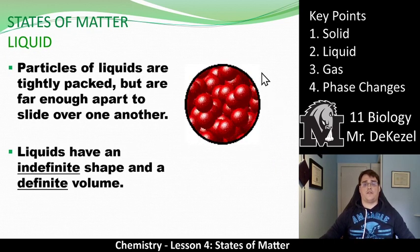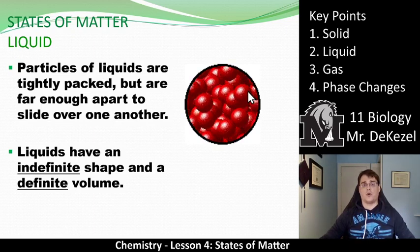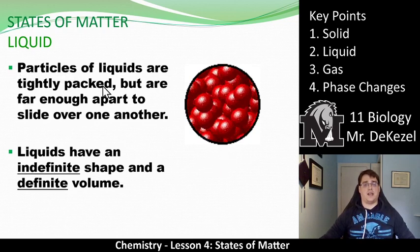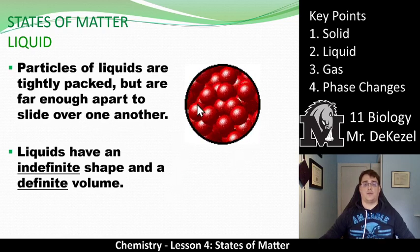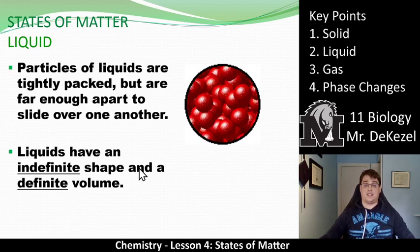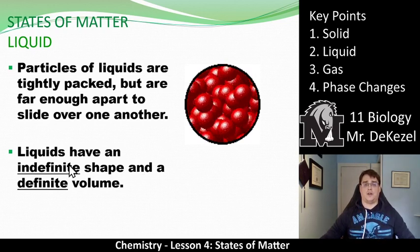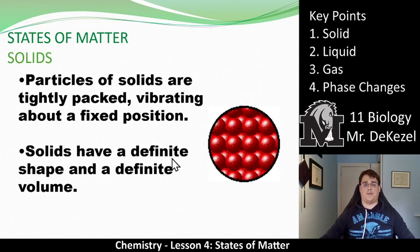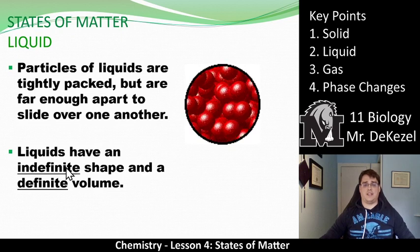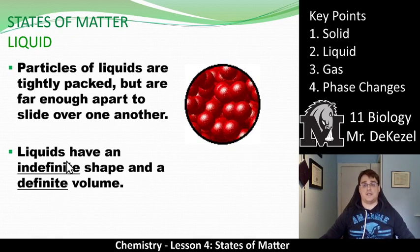When we talk about liquids, they're still fairly packed together, but you can see they're moving a whole bunch more, and they're not as orderly as they were in the solid picture. So the particles of liquids are tightly packed, but are far enough apart to slide over one another. They're bumping, they're moving, not all of them stay on the screen the whole time. So this is what causes liquids to have an indefinite shape and a definite volume. So they take up a certain amount of space, but their shape is all over the place. They take the shape of whatever container they are occupying. But if the containers are the same volume, they will fill it up to the same amount. So if we would say solids have a definite shape and a definite volume, liquids have an indefinite shape and a definite volume. So the volume always stays the same.